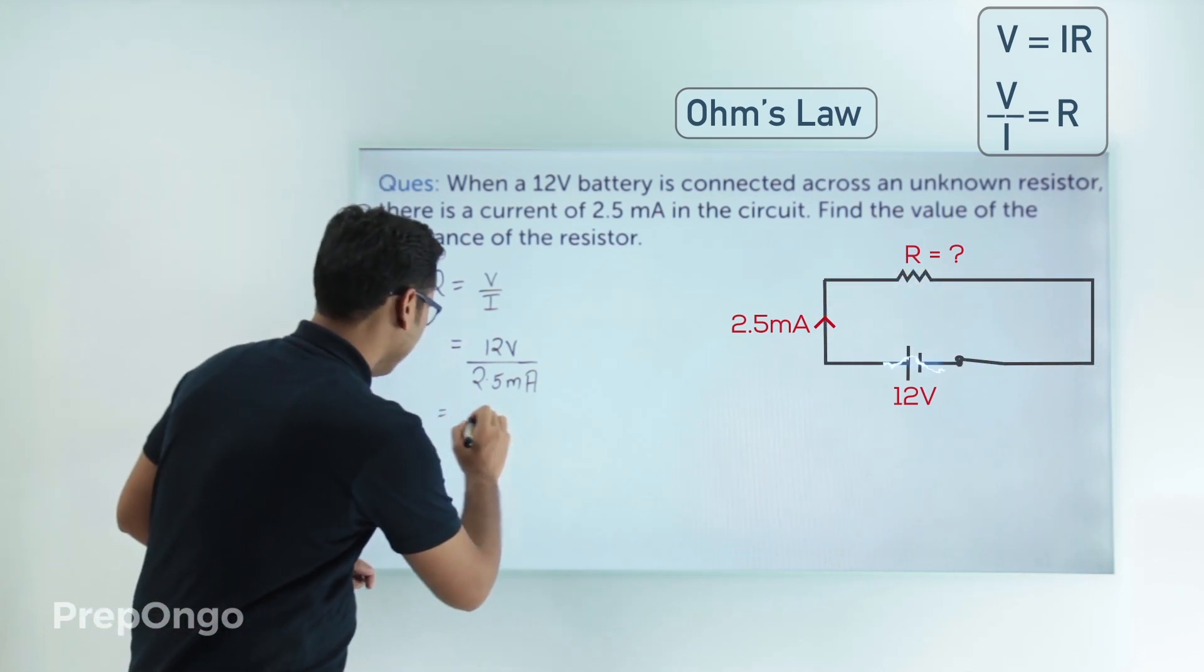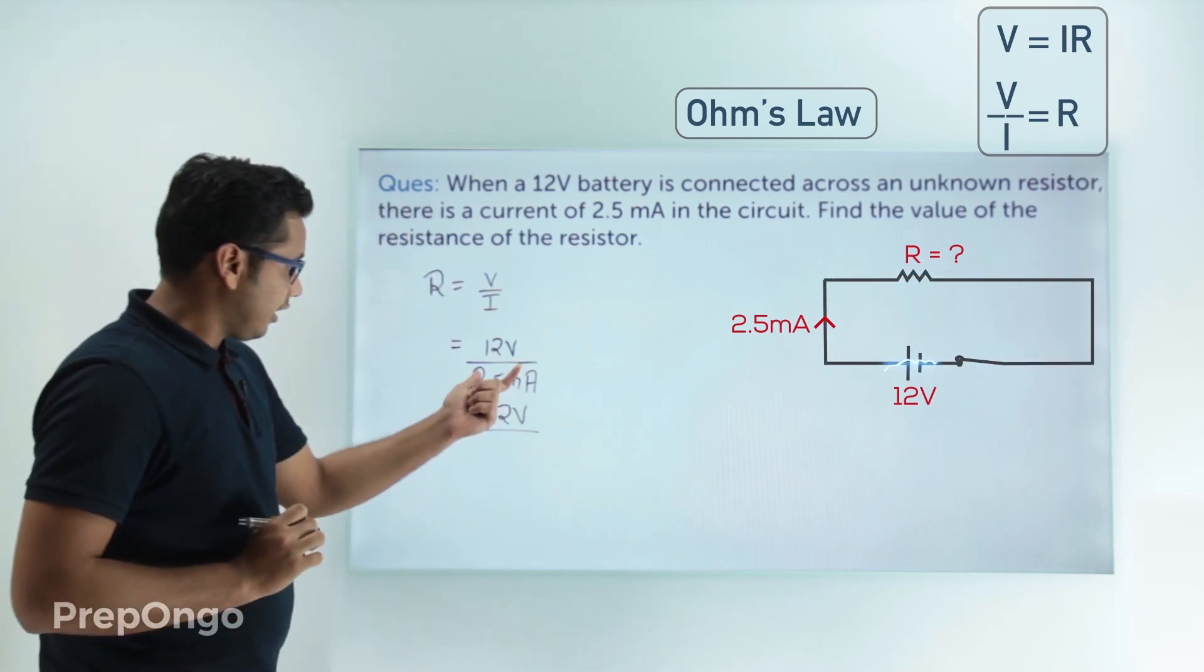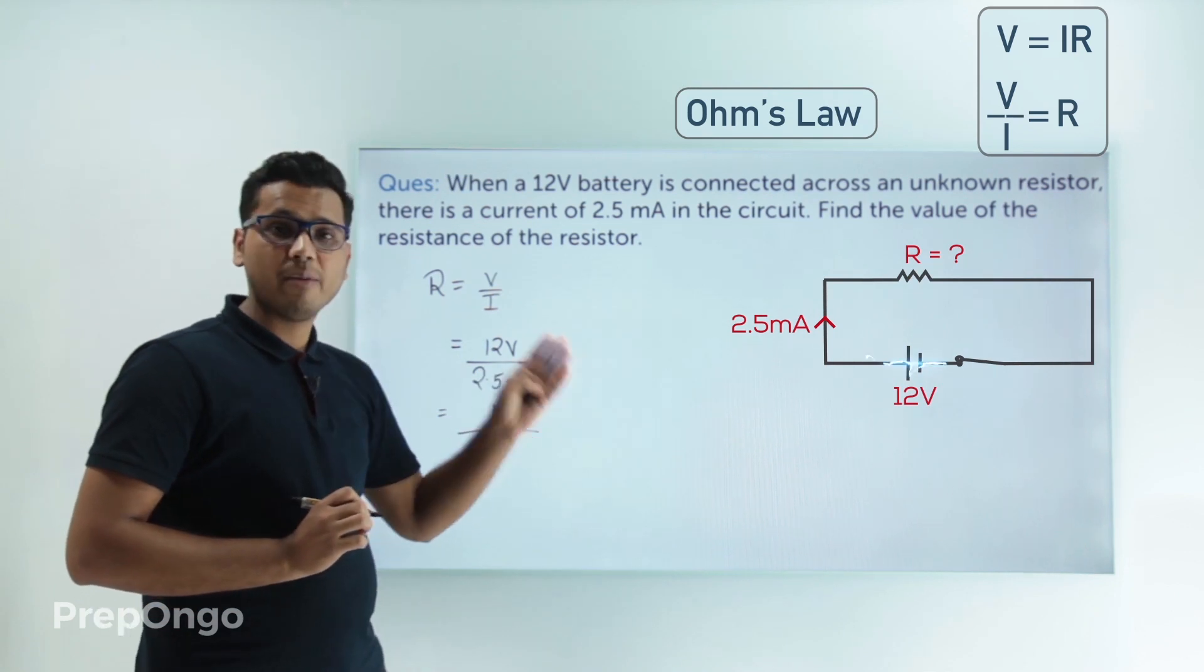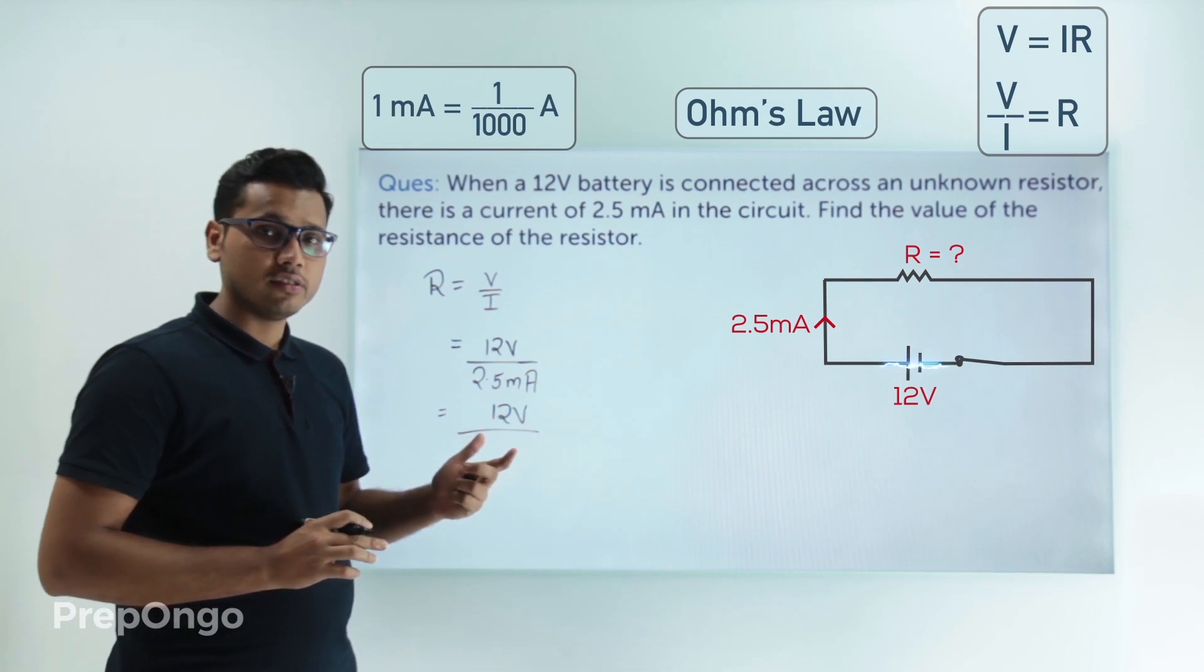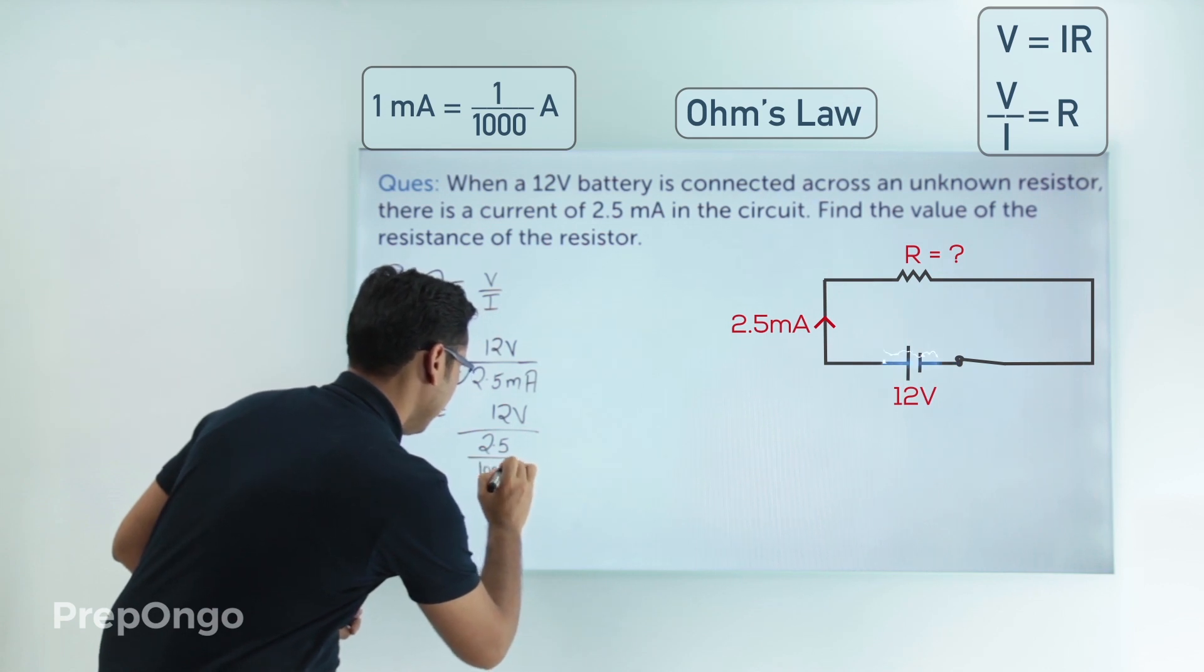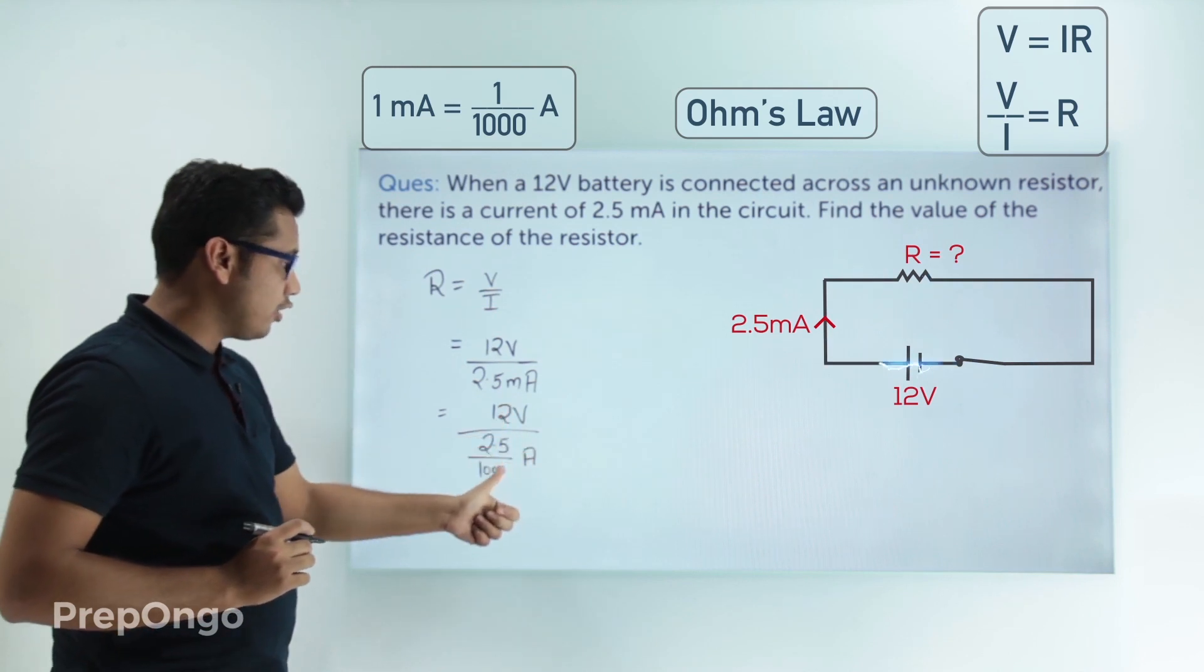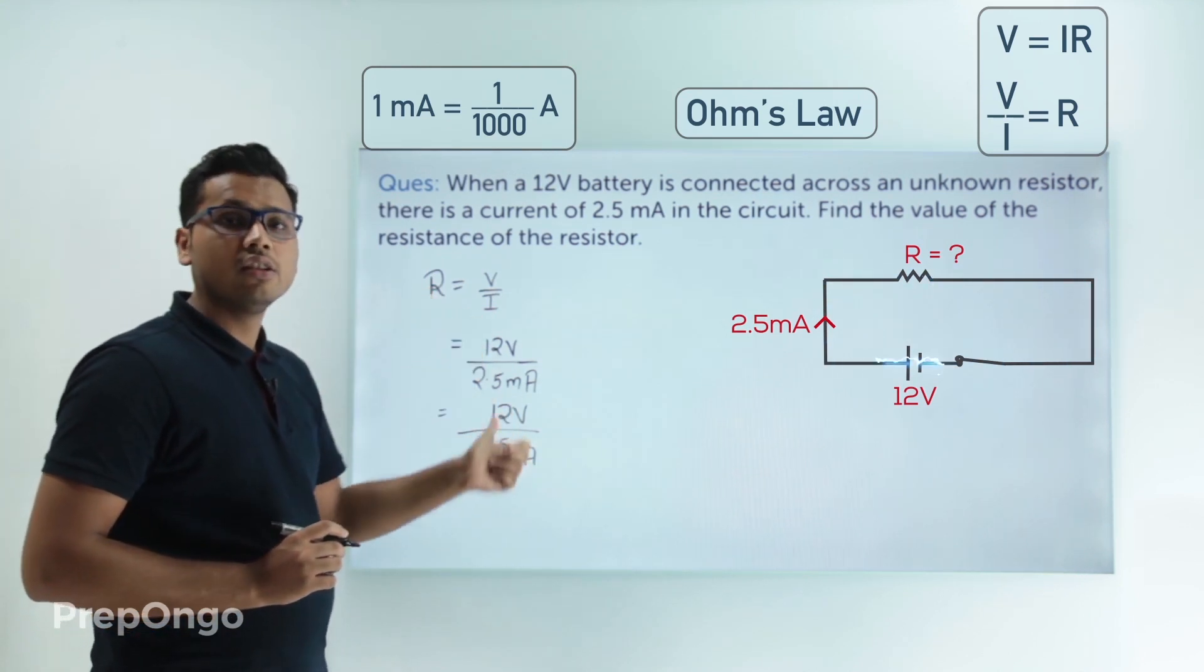This will be 12 volts upon... if we have to convert the value of milliampere into amperes then we have to divide this by 1000. So this will be 2.5 upon 1000 amperes, and now this value when we calculate will get the value of resistance in ohms.